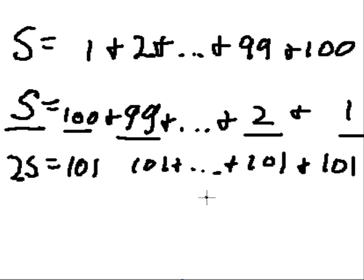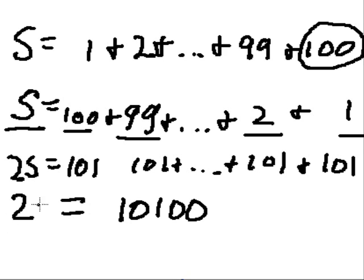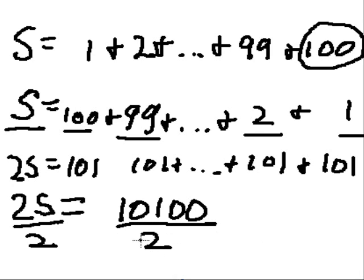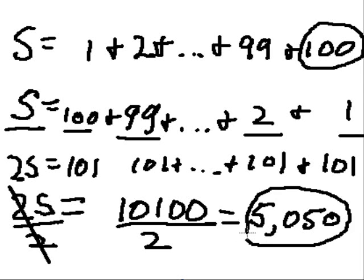How many of these 101's do I have? I have 100 of them. So I multiply 101 times 100, which gives me 10,100. That equals 2s. Divide by 2: half of 10,000 is 5,000, and half of 100 is 50. So the sum of all the numbers from 1 to 100 is 5,050.